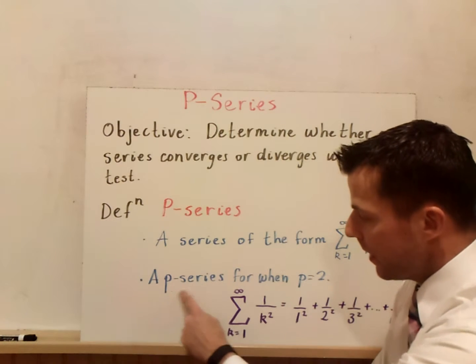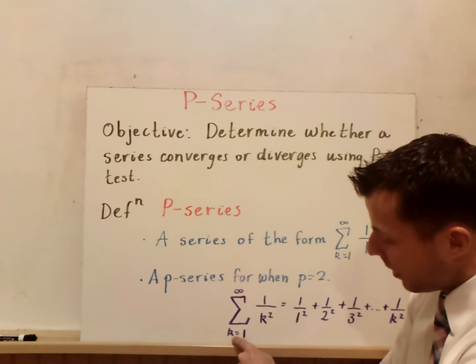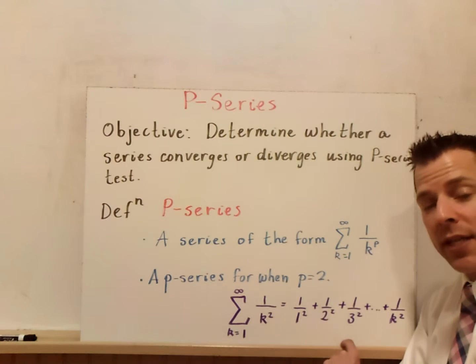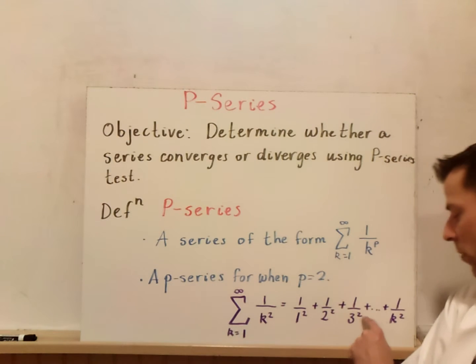For example, a p-series for when p equals 2 is the following: k equals 1 to infinity of the sum of 1 over k squared, which if you write some of the series out is 1 over 1 squared plus 1 over 2 squared plus 1 over 3 squared and so on.